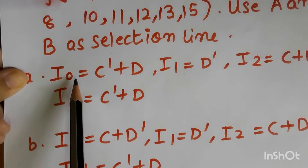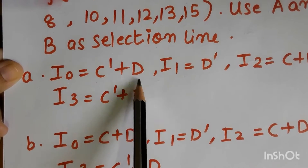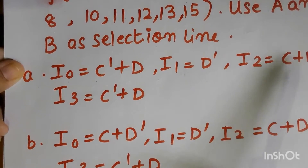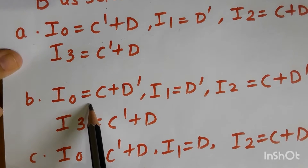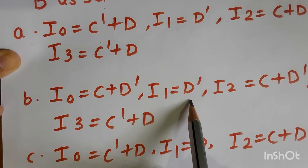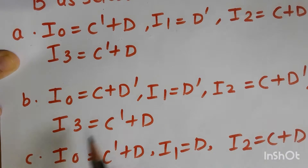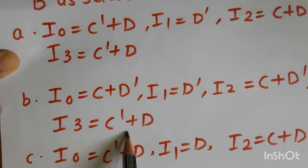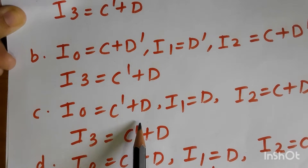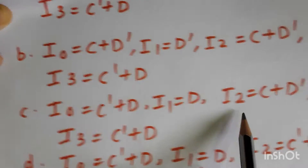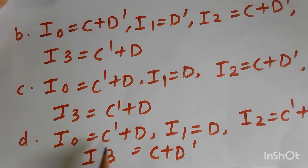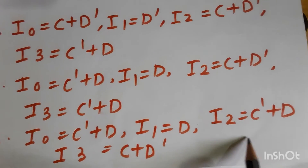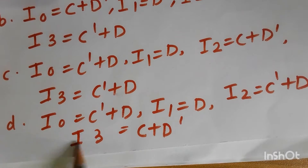Option A: I0 = C' + D, I1 = D', I2 = C + D', I3 = C' + D. Option B: I0 = C + D', I1 = C' + D, I3 = C' + D. Option C: I0 = C' + D, I1 = D, I2 = C + D', I3 = C' + D. Option D: I0 = C' + D, I1 = D, I2 = C' + D, I3 = C + D.